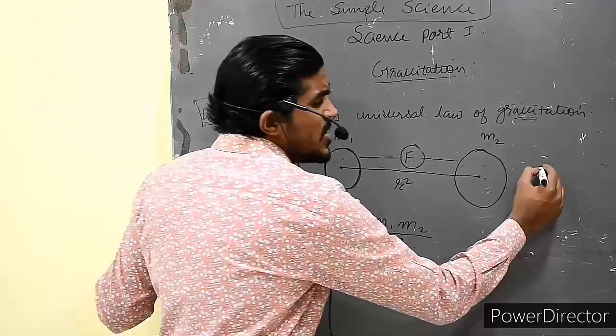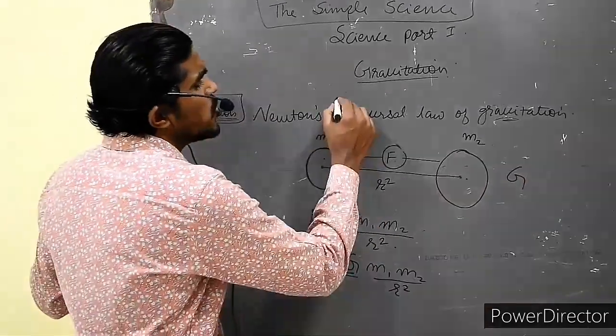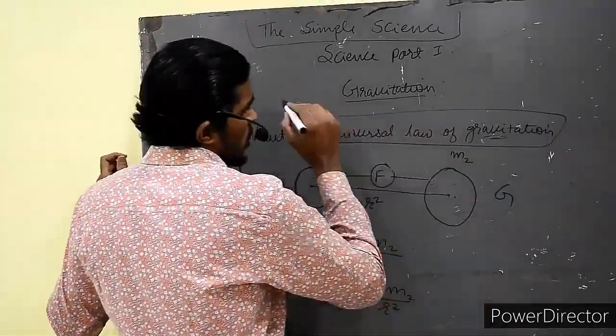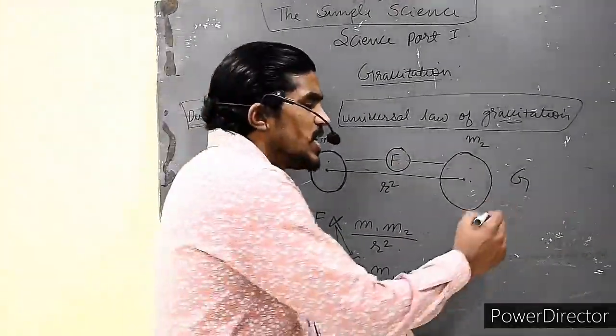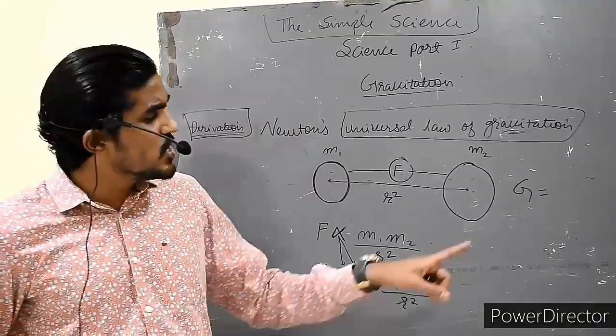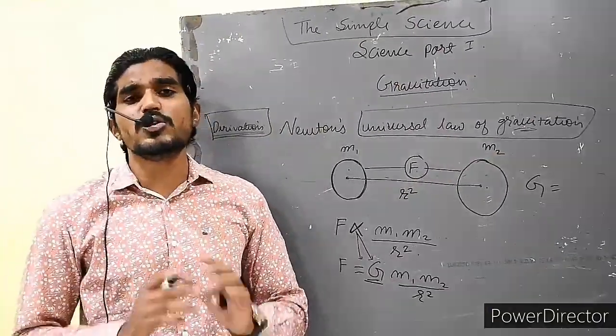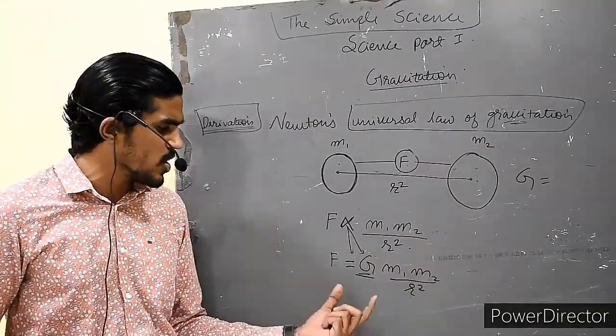But what is this G? This G means universal gravitational constant. What does this G mean? This G means universal constant. This G will be constant for the whole universe. G will be universal constant.